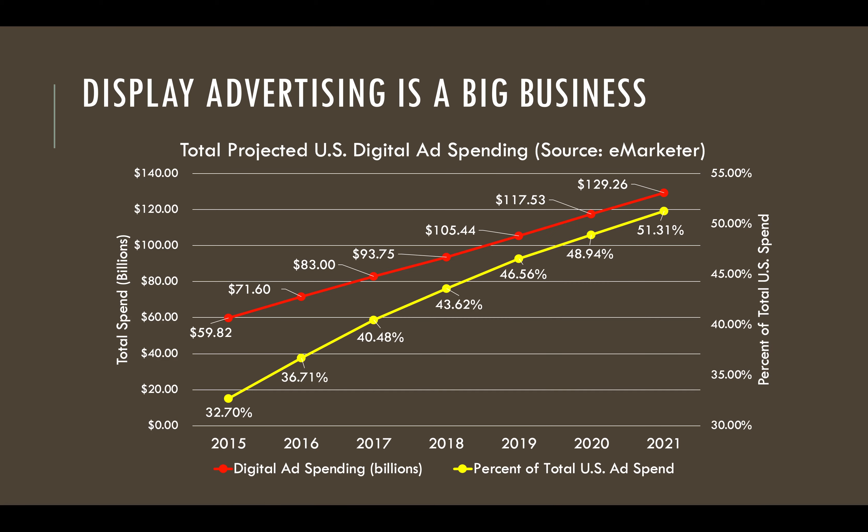The total projected US online ad spending is increasing over years. As an important type of online advertising, display advertising is advertising on websites through banners or other ad formats made of text, images, and video. Display advertising now is the main income source of most online media.